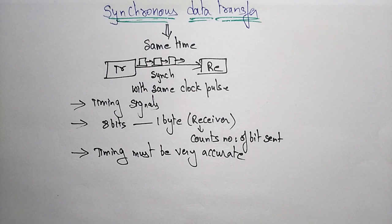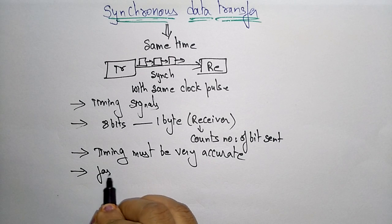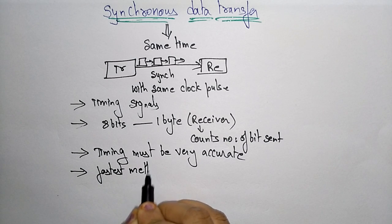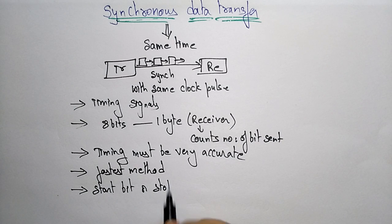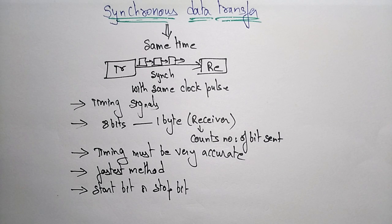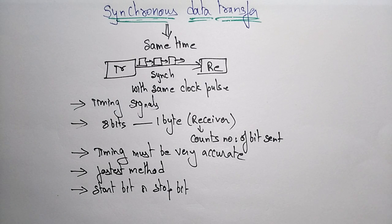Synchronous data transfer is a faster method of data transmission when compared to asynchronous. In synchronous transmission we don't have any start bit or stop bit, whereas in asynchronous data transmission, after the completion of one byte, it will indicate with a start bit and a stop bit. The start bit tells the receiver that data is coming, and after one byte the stop bit is sent. In synchronous, the receiver itself counts the number of bits sent by the transmitter.